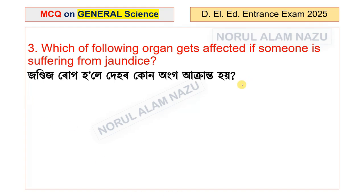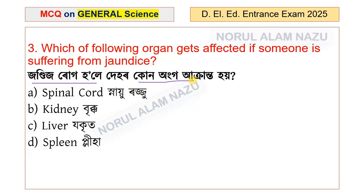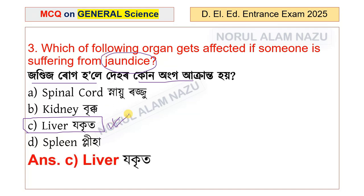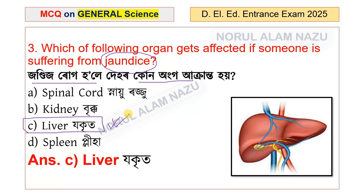Which of the following organ gets affected if someone is suffering from jaundice? The options are spinal cord, kidney, liver, and spleen. The answer is liver. The liver is the organ that gets affected in jaundice disease.